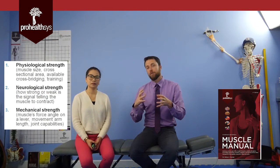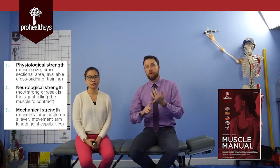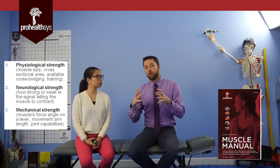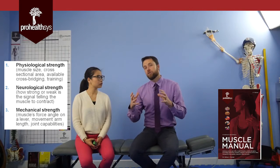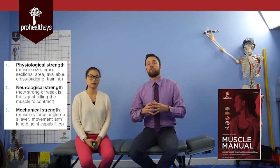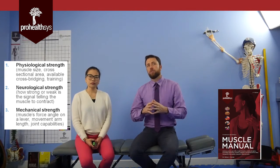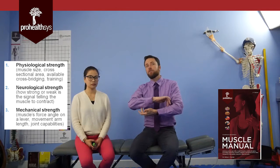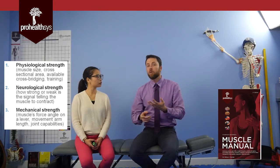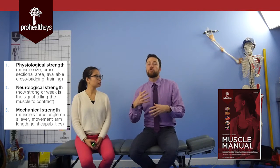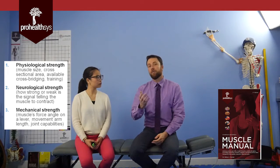The first one is physiological strength — that means the muscle size that you have. Bigger muscles tend to be stronger. Cross-sectional area available, and the bigger the muscle generally. Available cross-bridging: if you're in the mid-range of the muscle, they tend to have better strength. And the type of training that you do — if you are training for strength and power versus endurance, this will change the contractile abilities of that given muscle and vary the number of white and red fibers you might have.